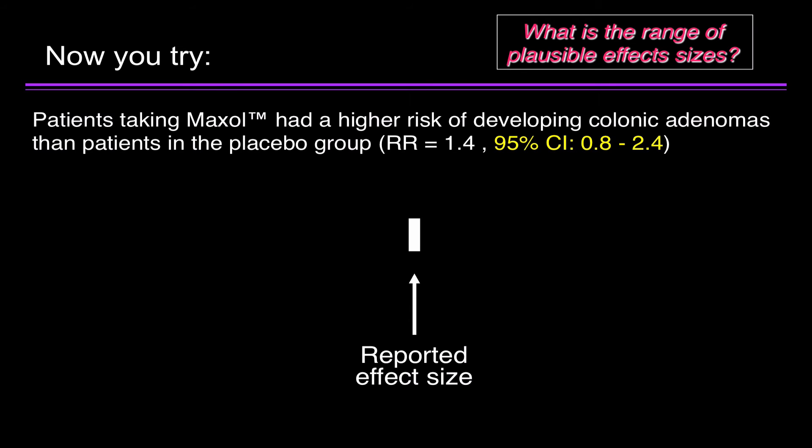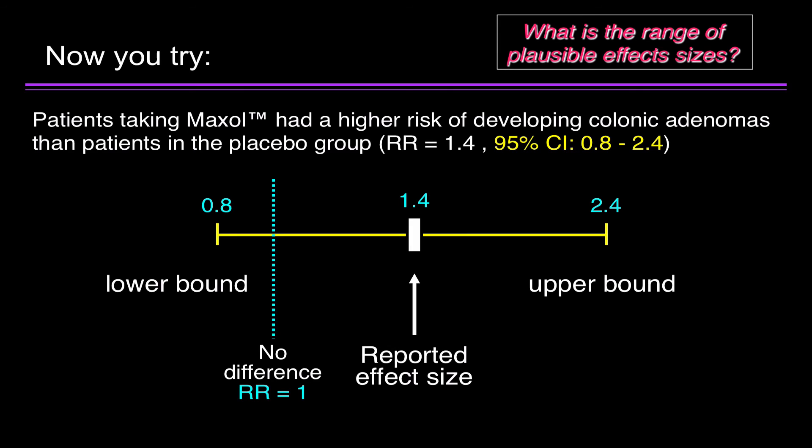The reported effect size is a relative risk of 1.4. But there's some margin of error. The lower bound is 0.8. The upper bound is 2.4. That's a wide range. Why? Well, no difference between the two groups would be a relative risk of 1, where the risk of developing colonic adenomas was equal in the Maxol and the placebo group.